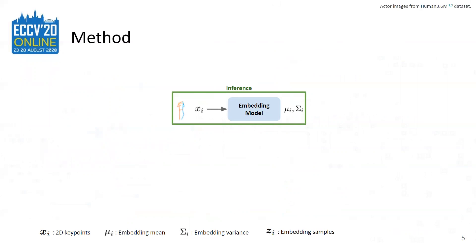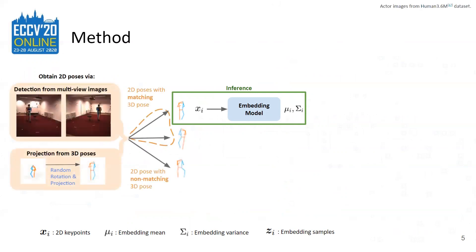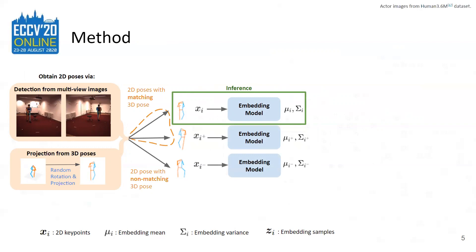During inference, our model takes keypoint input from a single 2D pose and predicts embedding distributions. During training, we form triplets of 2D poses from matching and non-matching 3D poses. Matching 2D pose pairs, or positive pairs, are detected from multi-view images or randomly rotated and projected from the same 3D pose. Non-matching 2D pose pairs, or negative pairs, are detected from images or projected from a non-matching 3D pose pair. Each element of the triplet is fed into our embedding model.